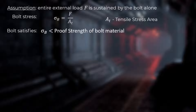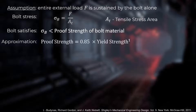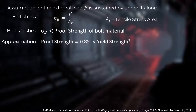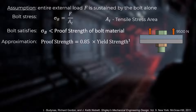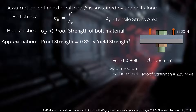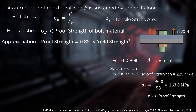In case of materials whose proof strength is not available, it can be approximated to be 85% of its yield strength. For example, if a load of 9500 Newton acts on a joint, then picking an M10 bolt made of low or medium carbon steel, we see that the proof strength of the bolt is higher than the stress developed due to this external force.